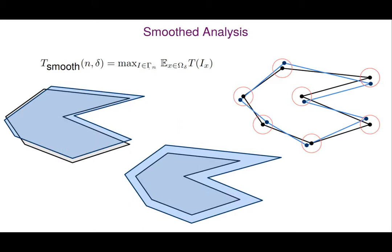To make this formal: we take the worst instance of a given size — the maximum over all instances of size n — and then look at all perturbations of a small magnitude. Delta represents the magnitude of perturbation, which in our example corresponds to the radius of the circle. We then look at the expected running time for a perturbed instance and take the maximum over all instances. We can perturb vertices, perturb edges — which preserves more structure like angles — or inflate everything.